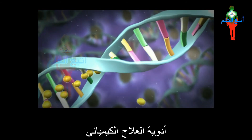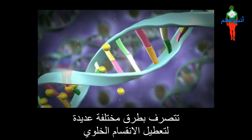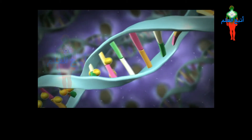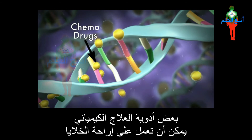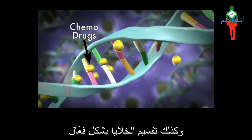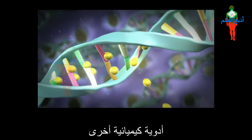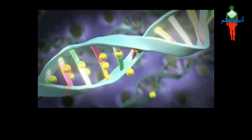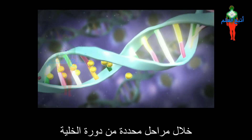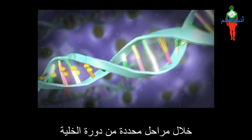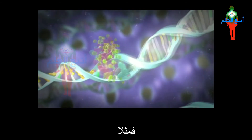Chemotherapy drugs act in many different ways to disrupt cell division. Some chemotherapy drugs can act on resting cells as well as actively dividing cells. Other chemo drugs can act on cells only during specific stages of the cell cycle.